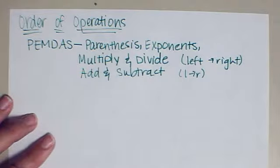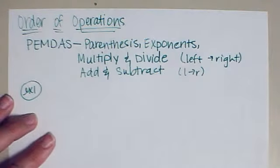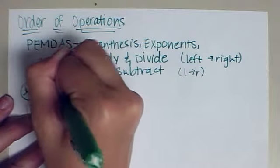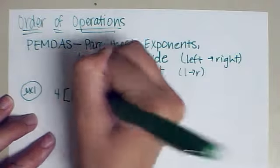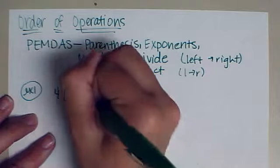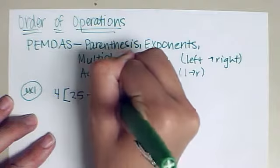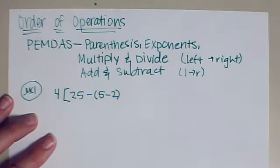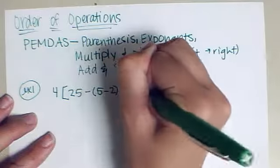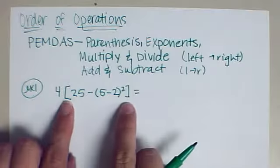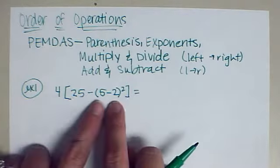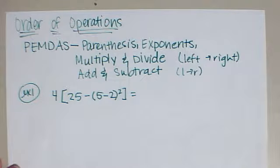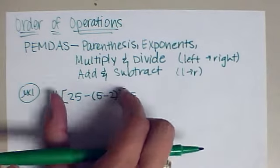We're going to look at a couple of examples together. Example number one: 4 open bracket 25 minus open parentheses 5 minus 2 close parentheses squared. In class, some people mentioned that this is the first time that they've ever seen a bracket as opposed to a parentheses group. It's just another form of parenthesis to help you understand the difference. So you know these two go together and these two go together.